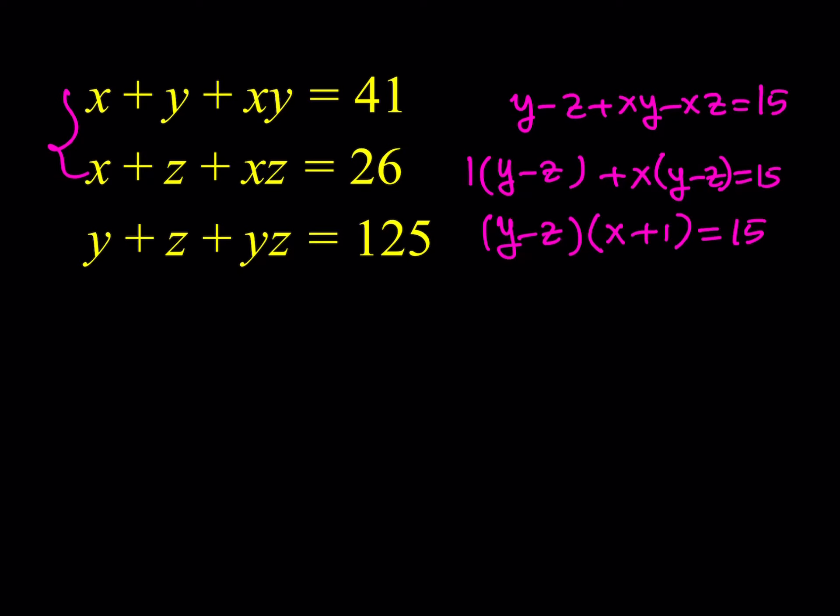If we add all three equations up we would get x twice, y twice, z twice, and then the cross terms xy, xz, and yz. There are different approaches you can try, but in order not to make this video too long I want to keep it short. I'll use one strategy, but hopefully the different strategies I mentioned give you some ideas.